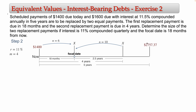For the 2,757.37 due at five years, I also need to go back in time to the focal date. There are 1.5 years to the focal date and 5 years to that payment, so the distance is 5 − 1.5 = 3.5 years. 3.5 × 4 = 14 compounding periods. So n = −14 for this amount, since I'm computing its present value at the focal date.